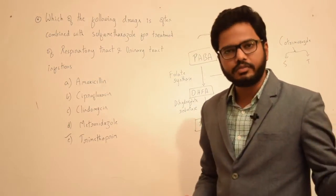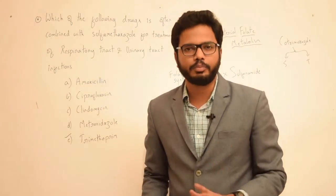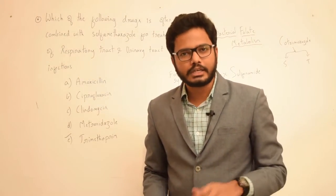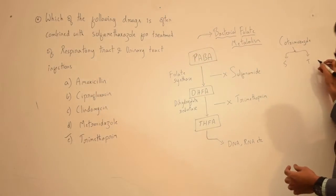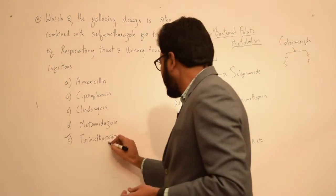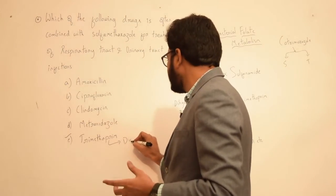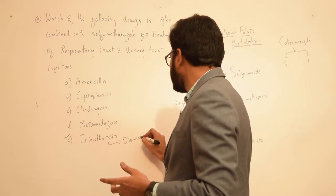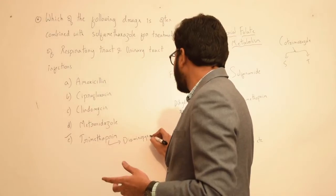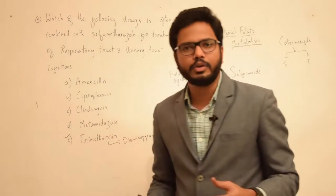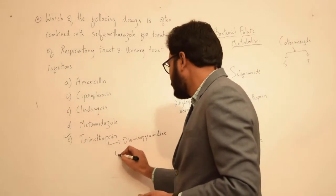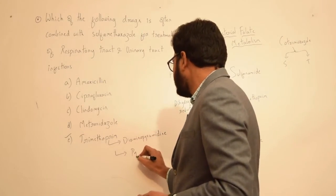Trimethoprim is chemically a diamine pyrimidine, and it is related to the anti-malarial drug called pyrimethamine.